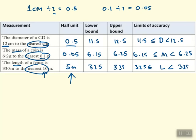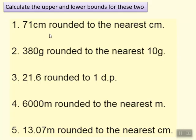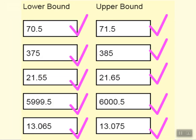The method is: look at what it says — 'nearest whatever' — halve that to get your half unit, then add it on and take it off the given number. Before we stop, have a go at working out the upper and lower bound for all of the questions shown. Pause and try them now, then I'll show you the answers. Okay, those are the answers — I hope you got the same. There's one more video to watch after this, so please watch that now.